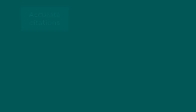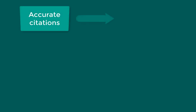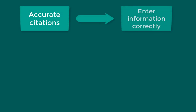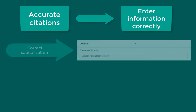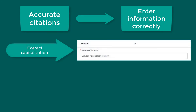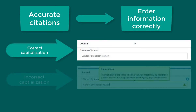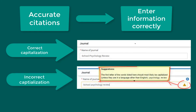In order to generate accurate citations, you must enter the information correctly. For example, capitalization and spelling need to be correct. If something is not formatted correctly, you will see a caution sign with suggestions on how to correct the issue.